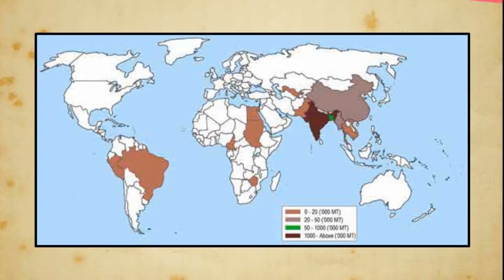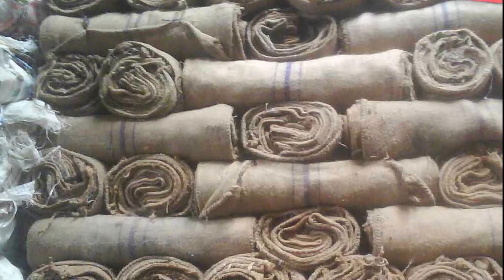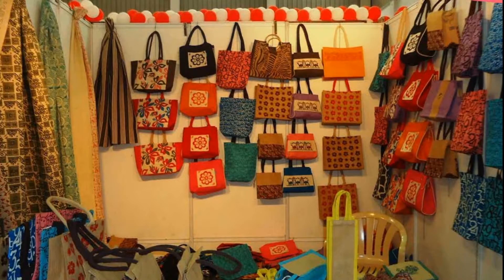India, Bangladesh and China account for 85% of the world's production. Jute is also produced on a small scale in Myanmar, Nepal, Thailand and Brazil. Bangladesh is the world leader in jute production in the international jute market. Jute faced tough competition from the development of synthetic gunny bags. But the government of India is making efforts to promote its products because, being natural fibres, they do not damage the environment.